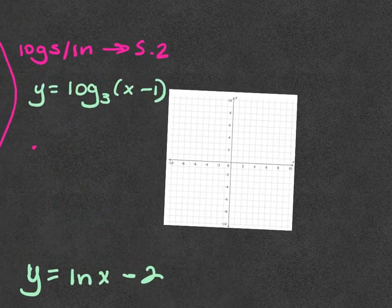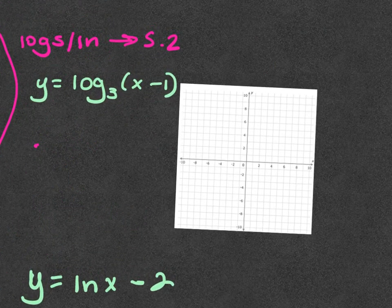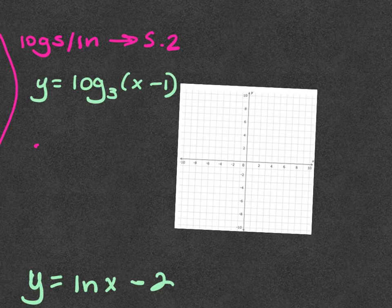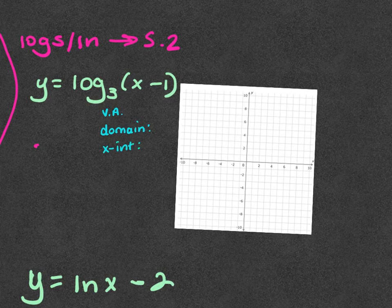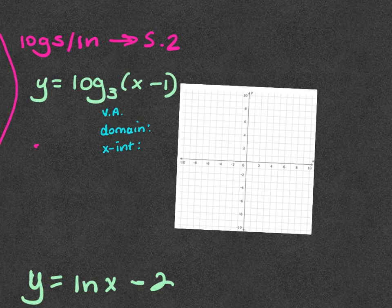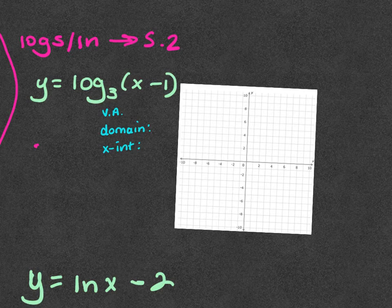Now we go to logs — this is section 5.2 but they are grouped together at the beginning. With logs we have a vertical asymptote and a restriction on domain, and we have an x-intercept. It will ask for (a) vertical asymptote and (b) domain. On exponential there's no restriction — domain is negative infinity to positive infinity — but on logs we restrict it. The range would be all real numbers.